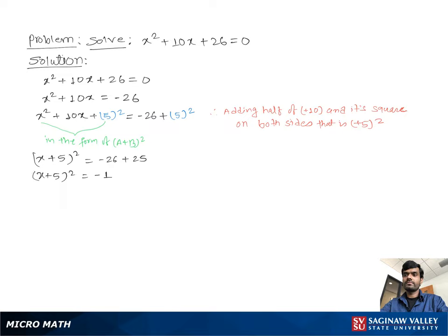Then we can write x plus 5 equal to plus or minus the square root of negative 1, because the square on the left side goes to the other side as a square root. We can write x plus 5 equal to plus or minus i, because i is defined as the square root of negative 1.